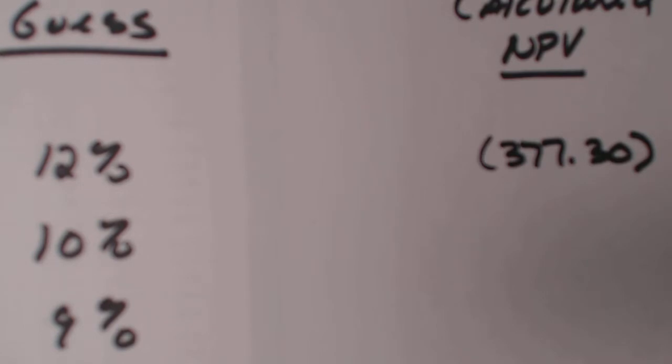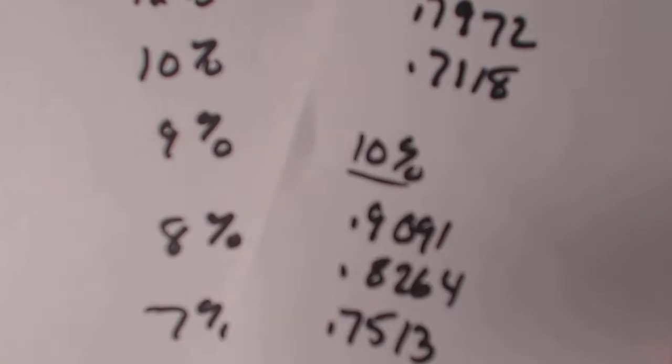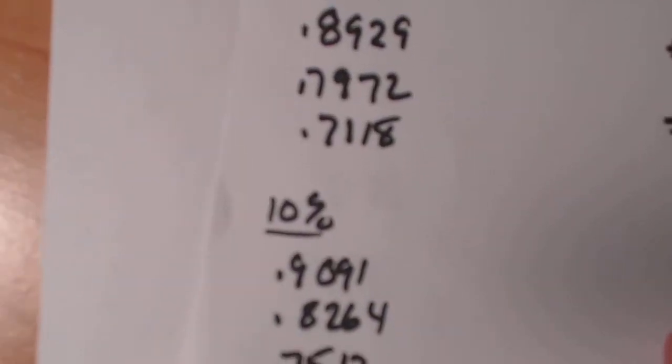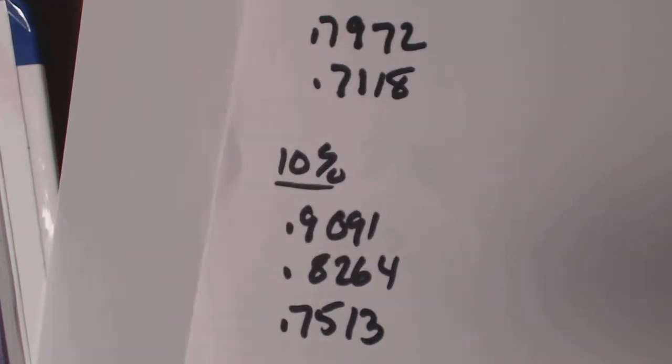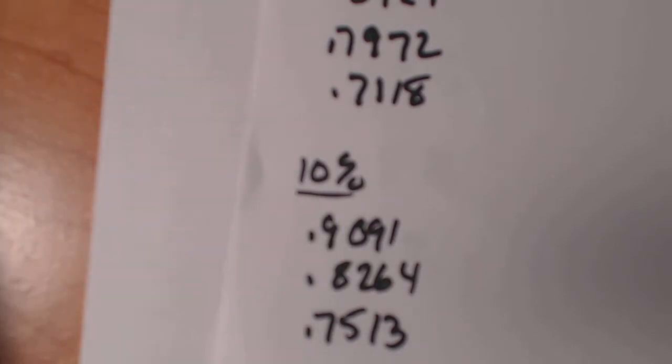So that's nowhere close to being $0. It's getting there. So then what we're going to do is we're going to take your 10% numbers. Let me show you the 10% numbers. So there they are, the 10% numbers, the 0.9091.